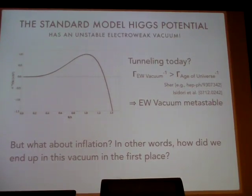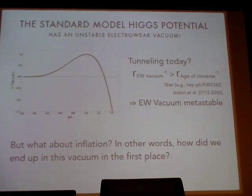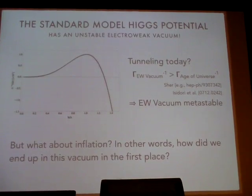If you consider that there was a period of inflation before today, there is an interesting prior question: it's great that once we are here we sit here long enough for planets, stars, and people to develop, but what about if we did have inflation? How robust is that? Is this something very special about just the standard model, or can I easily fix it by throwing some terms in?